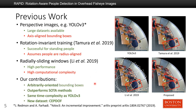In contrast, our approach can produce arbitrarily oriented bounding boxes. We outperform state-of-the-art methods while having the same time complexity as YOLO v3, which is one of the fastest object detection algorithms. In addition, we also introduce a new dataset named SEPTOF to evaluate our algorithm.